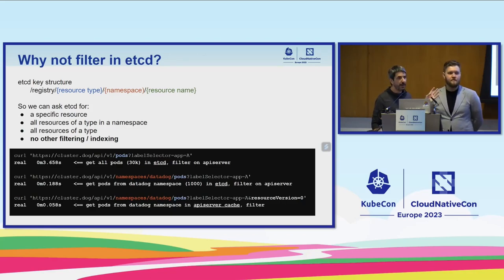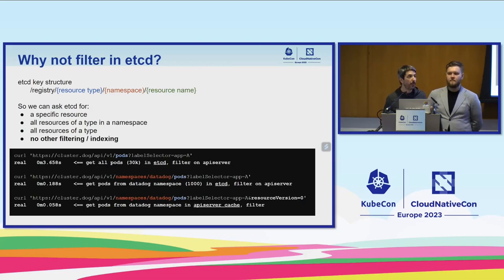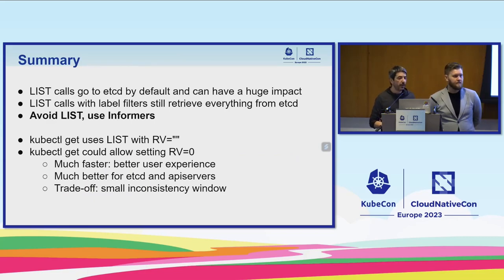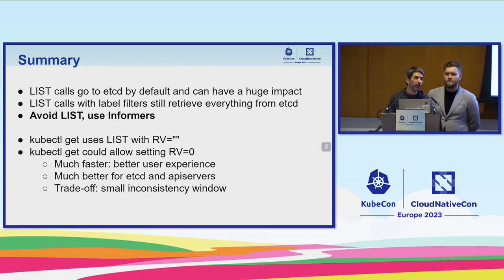For example: get all pods from app A means get all pods from etcd to API server, then filter on API server — so it's slow. Get all pods from namespace 'datadog' from app A is much faster because you only have a thousand pods in that namespace, not 30,000. And using resource version zero is much faster because filtering is done in the API server's memory. Whenever you write an operator or controller, use an informer — it will be much more efficient. In summary: list calls go to etcd by default and can have a huge impact, even if filters return a small amount of data. Use informers as much as you can.